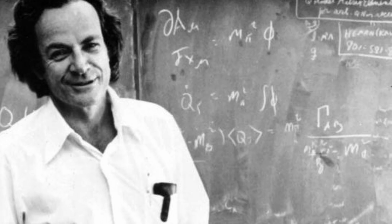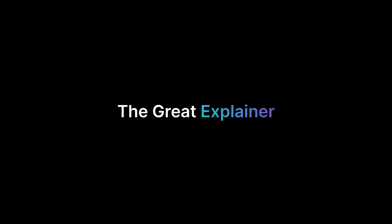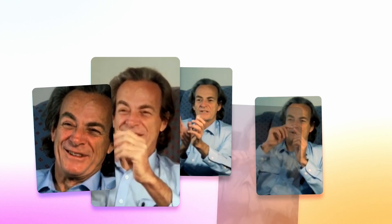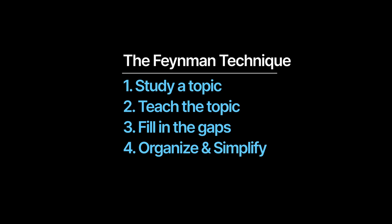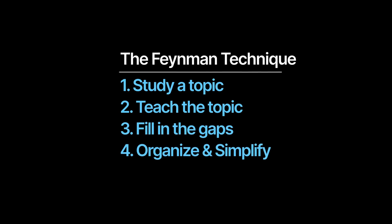Richard Feynman was a Nobel Prize-winning U.S. theoretical physicist. He was known as the Great Explainer for his ability to explain complex scientific topics in an easy-to-understand manner to both scientists and the general public alike. Feynman developed his own personal method of deeply understanding and internalizing complex topics, today known as the Feynman Technique. In this video, I'm going to teach you how to apply this technique to learning technical things.